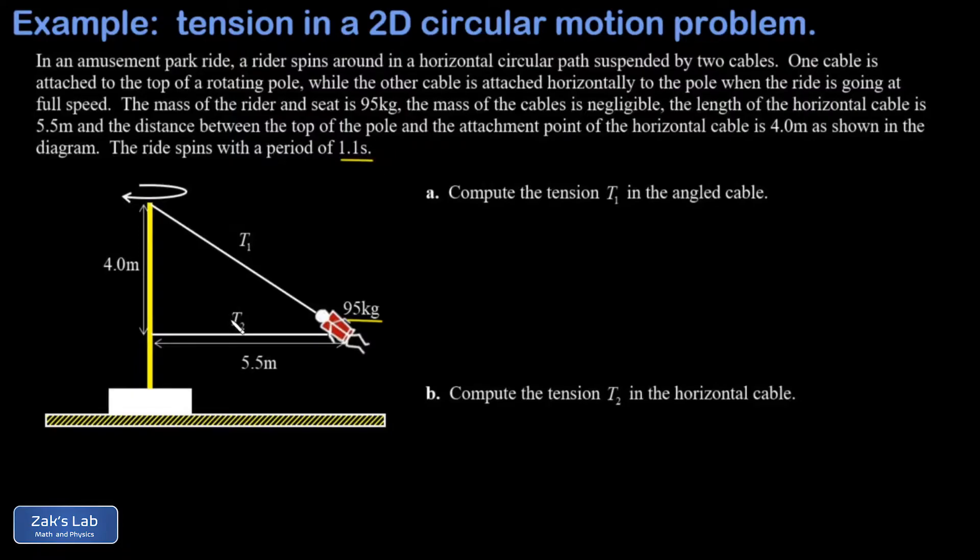When the ride is up to speed, the lower cable with tension T2 is perfectly horizontal. The cables are attached to a perfectly vertical pole which gives us a right triangle. The angled cable is attached to the top of the pole and has a tension of T1 in it.